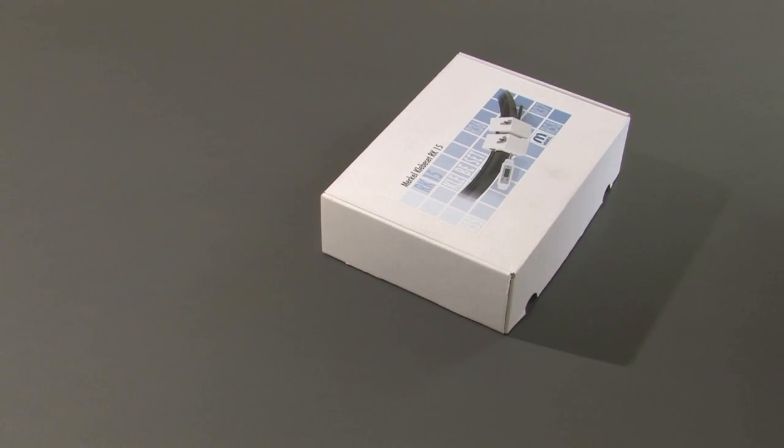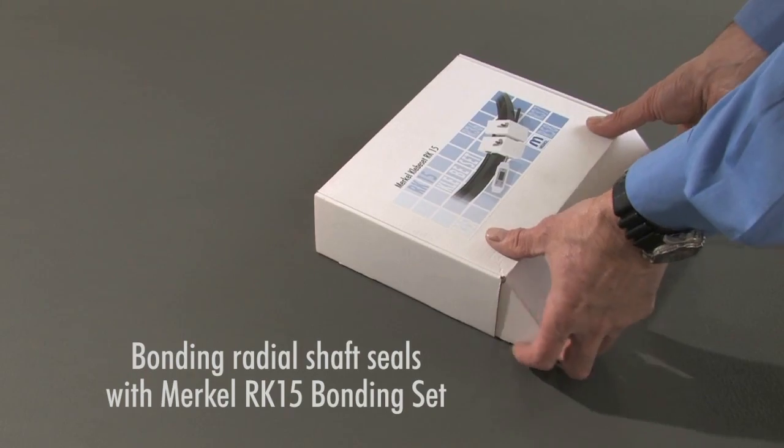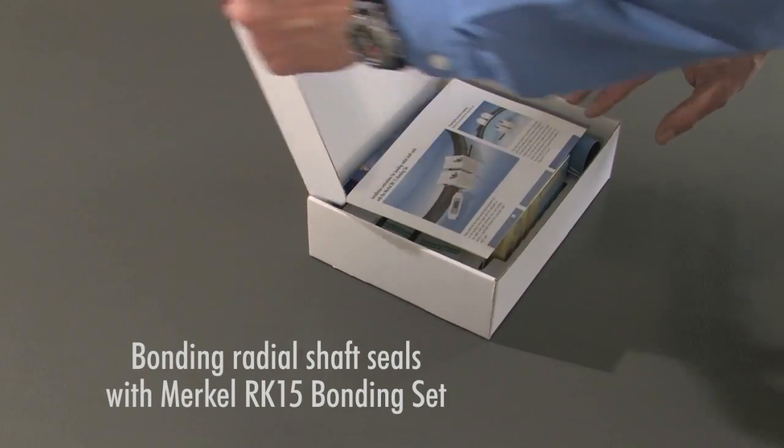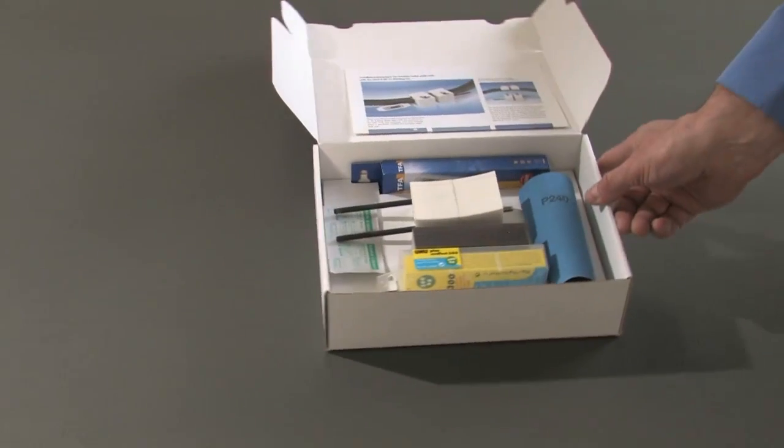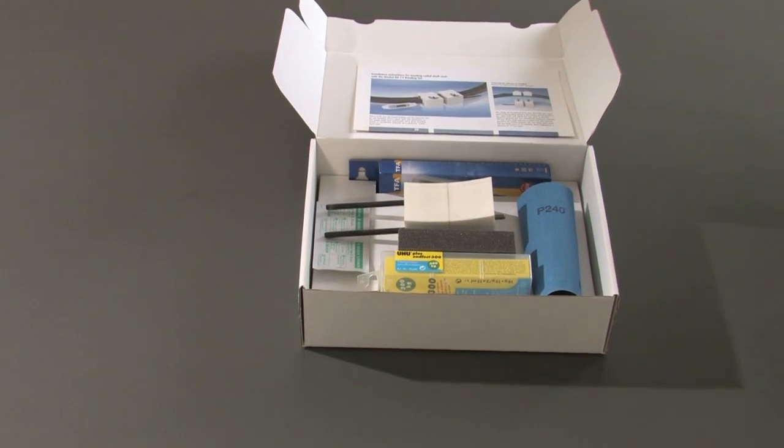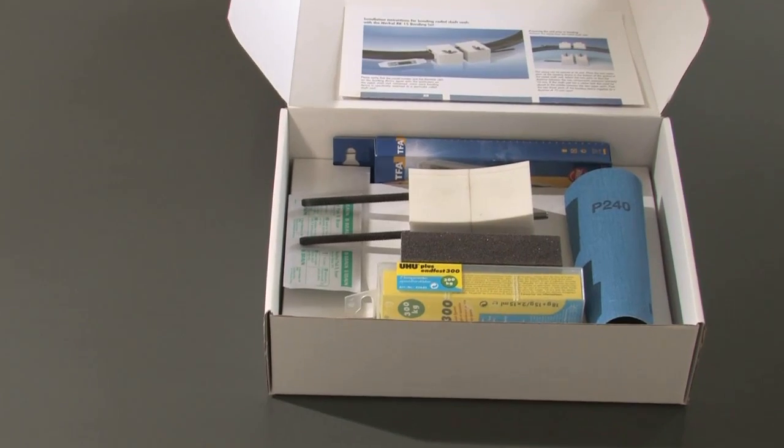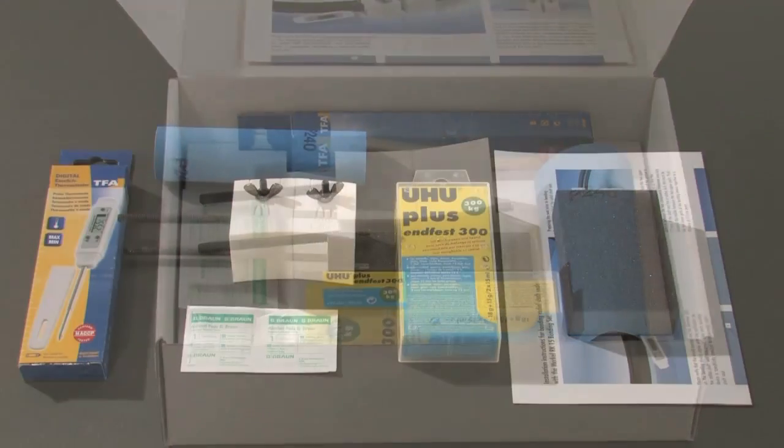Installation instructions for bonding radial shaft seals with the Merkel RK15 bonding set. Please note that this video is not a substitute for the operation instructions you have in print form. Please read these carefully before you use the bonding set.